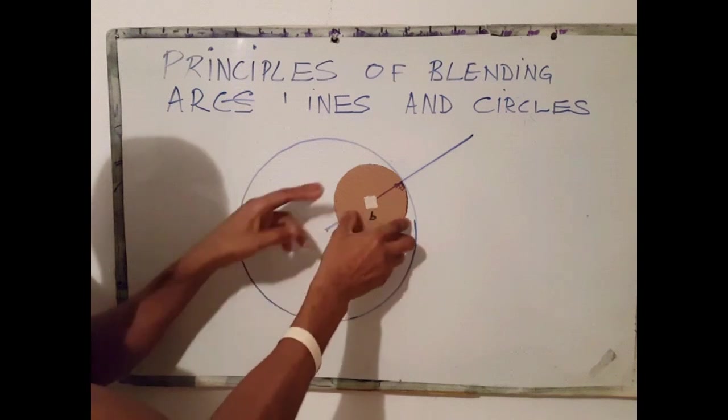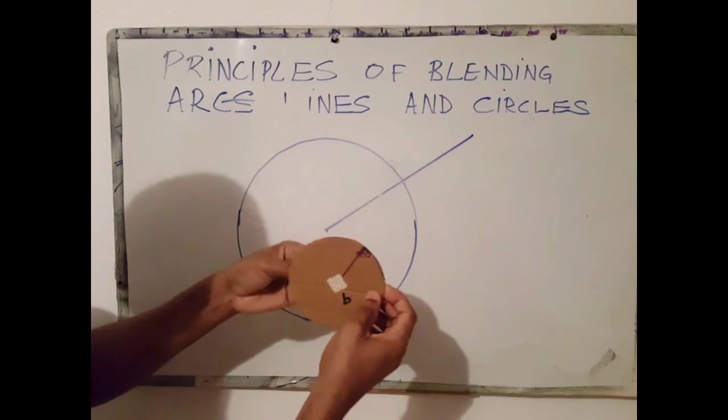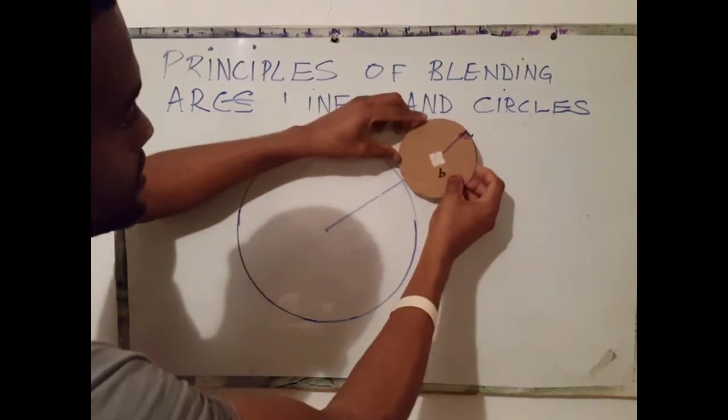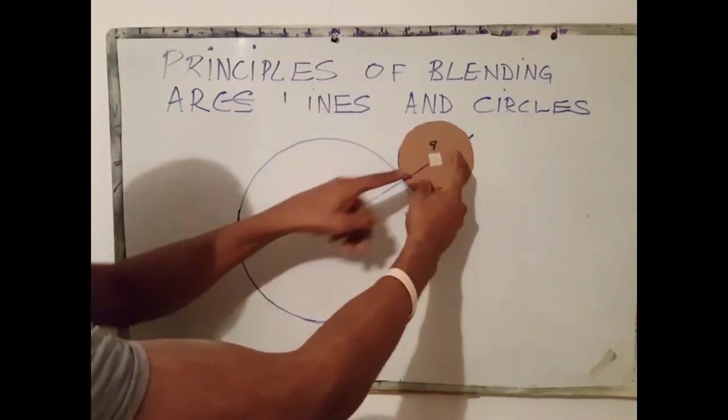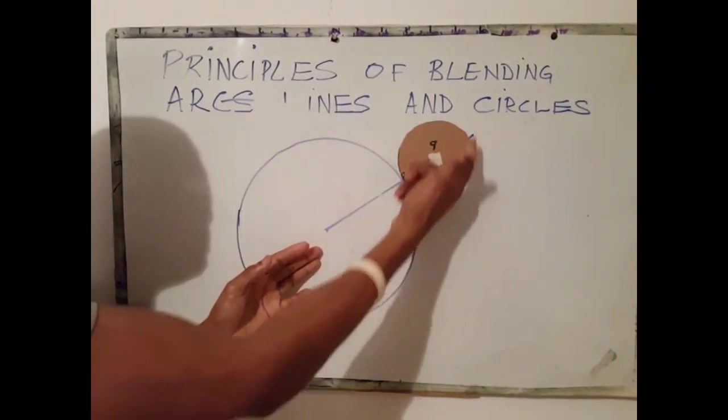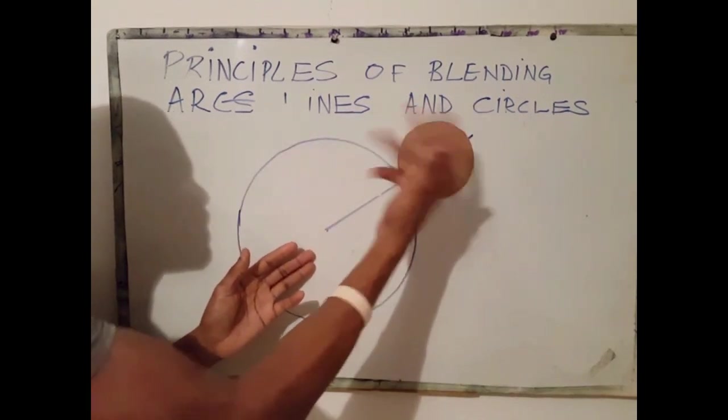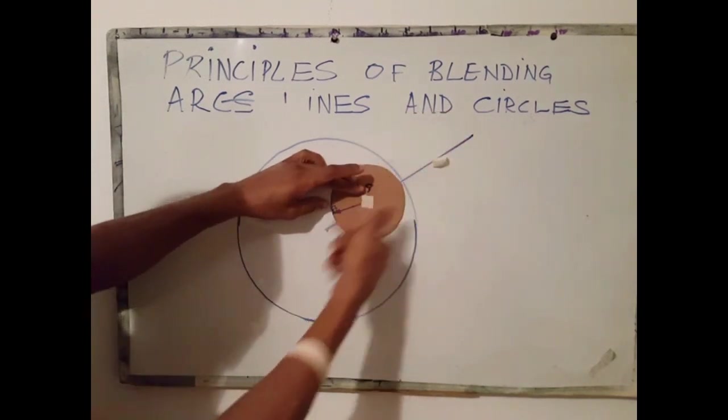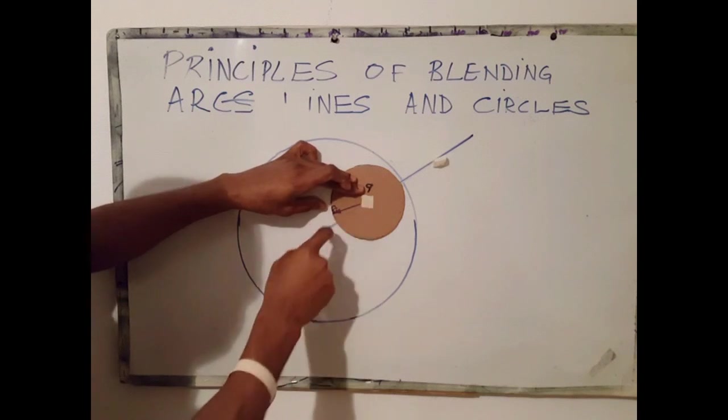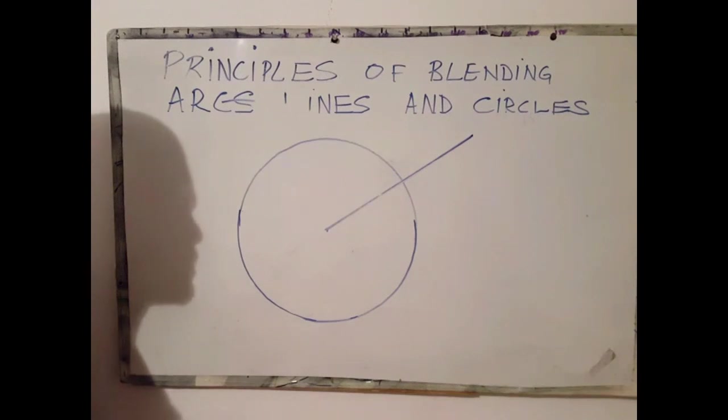If it's on the outside of this circle, we must add. If it's outside, from this center to that center, we must add. So once the blending circle is on the outside of the existing circle, we must add the radius. If it's on the inside, we subtract. Because obviously, from here to here is less than if it was to be placed outside there. And that's pretty much the principle of this.